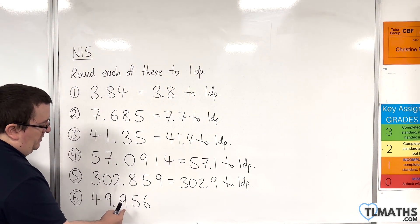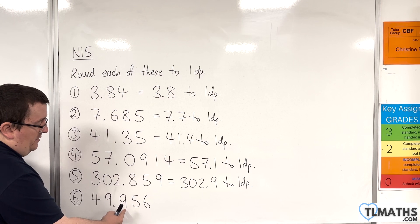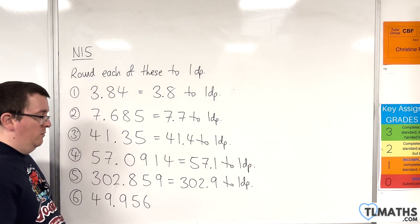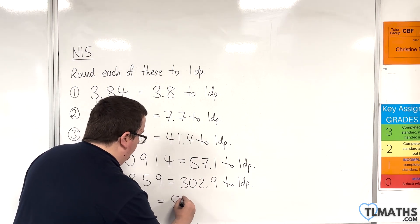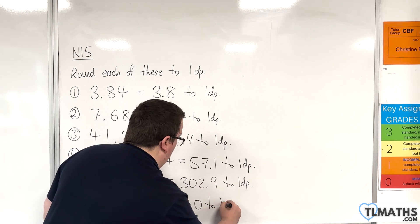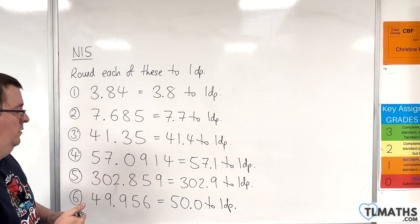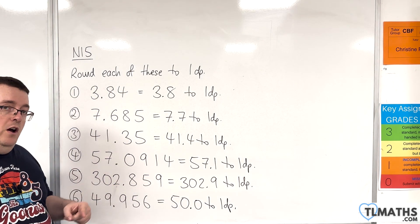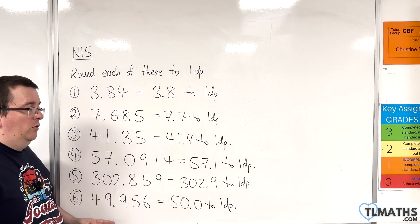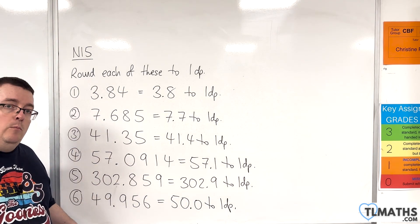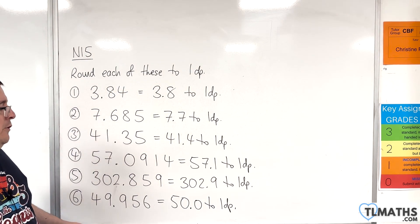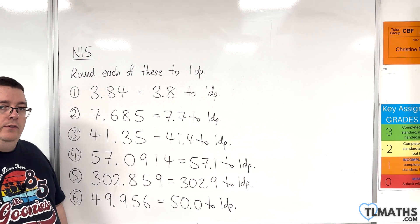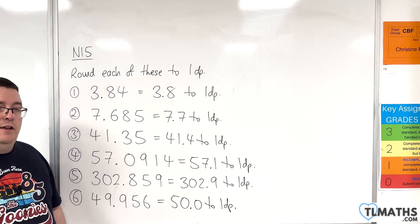Number 6, the first decimal place is there at 9. The number to the right is 5 or more, so we round this up. And that's going to round up to 50.0. Now, you might be going, should we just write 50 here? Because 50.0 is equal to 50. Well, no, you shouldn't. You should always make sure that your number has the correct number of decimal places. Okay, so 50.0 is correct to one decimal place. So, make sure you write the point zero there and don't leave it out.